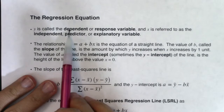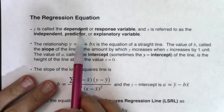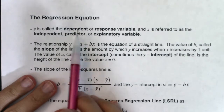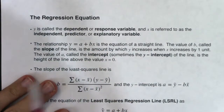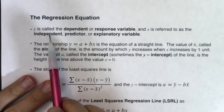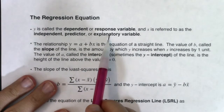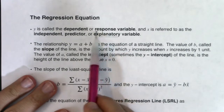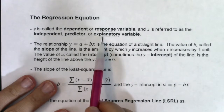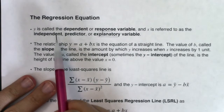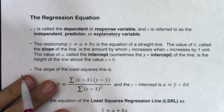Y is called the dependent or response variable — we always called y the dependent variable in a math class, but in stats we tend to call it response. X is referred to as the independent, predictor, or explanatory variable. These are the two terms from chapter 1: explanatory and response, or in math class, independent and dependent variable.